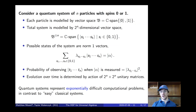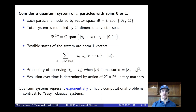The probability of observing a fixed bit string t1 through tn when measuring a quantum state is just the amplitude corresponding to that basis vector. The time evolution of a quantum system is determined by 2-to-the-n by 2-to-the-n unitary matrices. Modeling this evolution means multiplying together these exponentially large matrices — a task of exponential complexity. So quantum systems represent exponentially difficult computational problems, in contrast to easy classical systems. This is hard to simulate on a classical computer, but if we can harness it, it's very powerful — and that's the idea behind quantum computation.